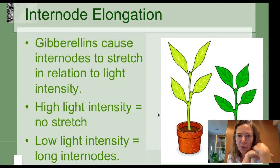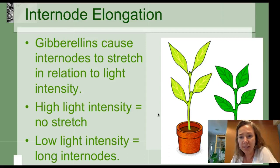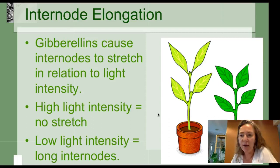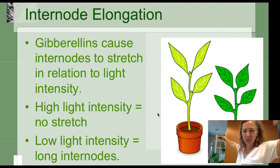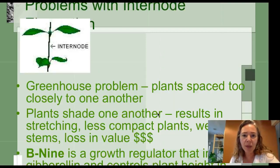Gibberellins cause internodes to stretch. If you've ever left a tarp on the grass too long and noticed that when you pull it back the grass is yellow and really long and stretchy — much longer than the grass around it — that's gibberellins at work. With high light intensity we don't see that kind of stretching, whereas in low light the gibberellins kick in to help stretch the internodes. Think of it as a survival mechanism: the gibberellins are saying, I don't have any light right now, so rather than putting my energy into creating chlorophyll, I'm going to cause my internodes to stretch so I can get around this thing that's blocking me — like the tarp — in order to capture the light. In the greenhouse, we can have plants that are too close together, not getting enough light, shading each other.